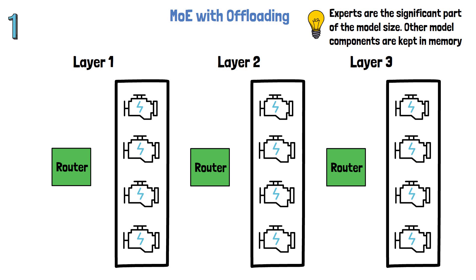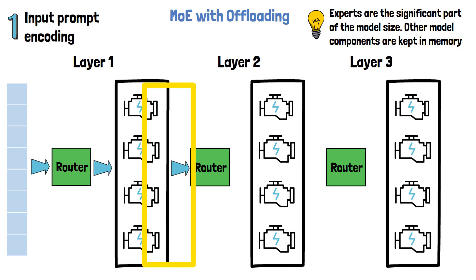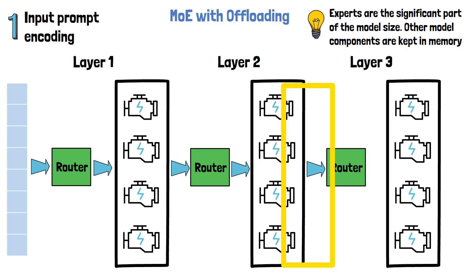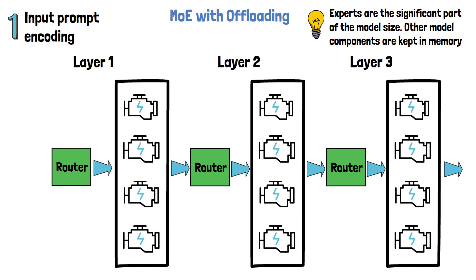The generative inference consists of 2 phases. The first phase is input prompt encoding. Here, a simple offloading technique already works quite well. When we process the input prompt, we first load the experts of layer 1 into memory — colored yellow to represent they are loaded into GPU memory. We feed the entire sequence to the first layer which handles all tokens in parallel. Once finished, layer 1 experts can be unloaded to make room for the experts of the second layer, and similarly for layer 3. Each layer's experts are loaded only once, since we process the input sequence in parallel and layer by layer.